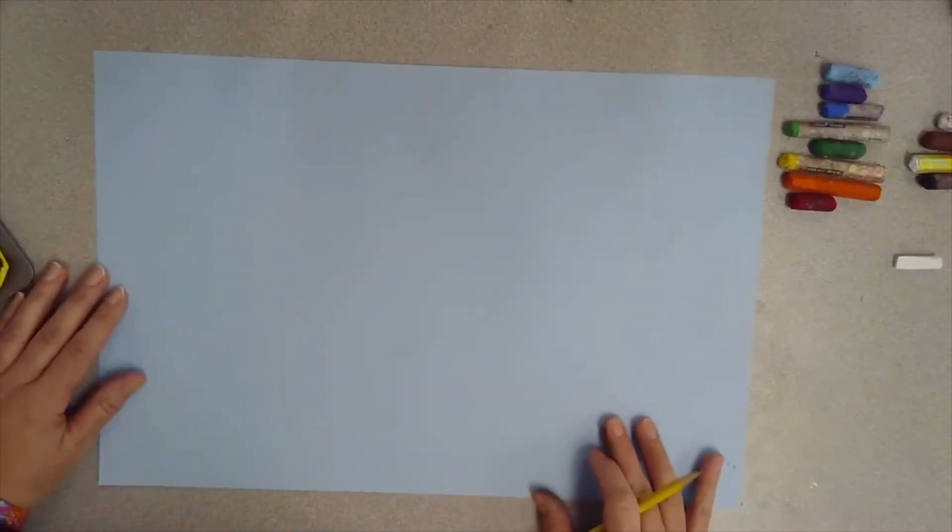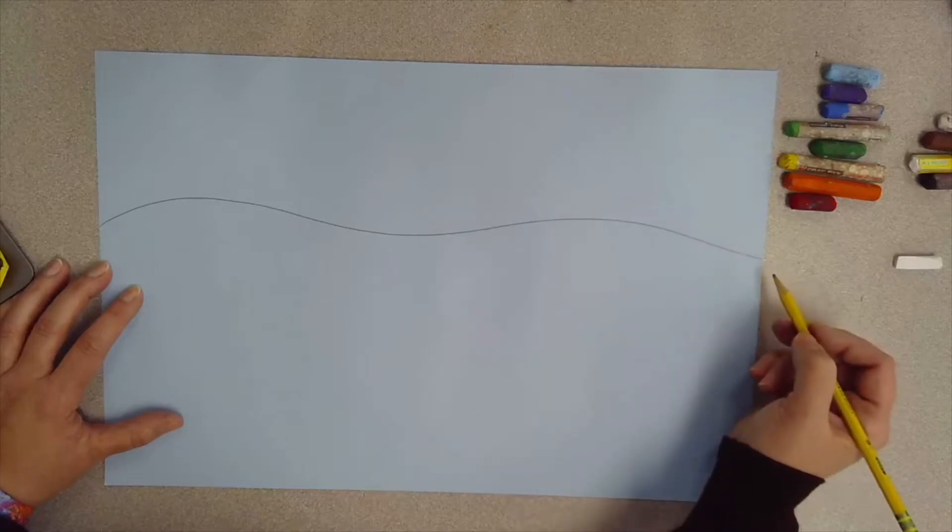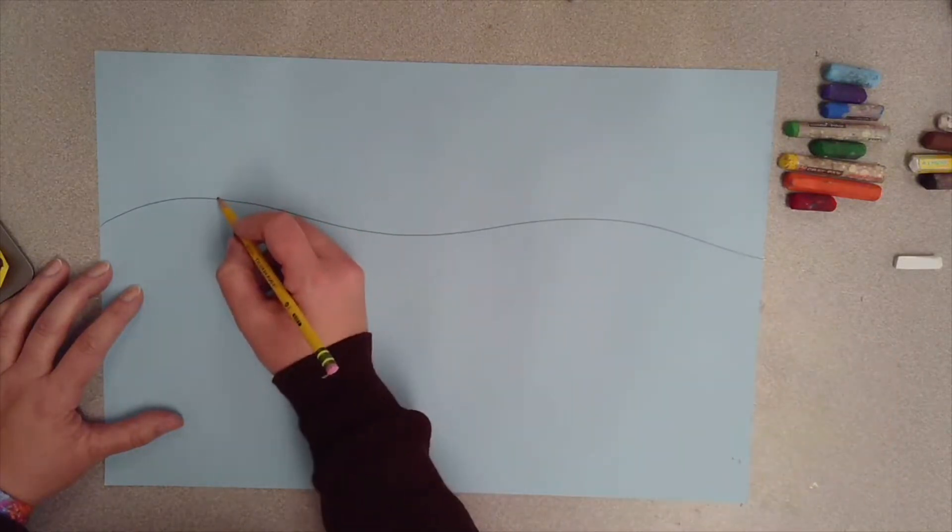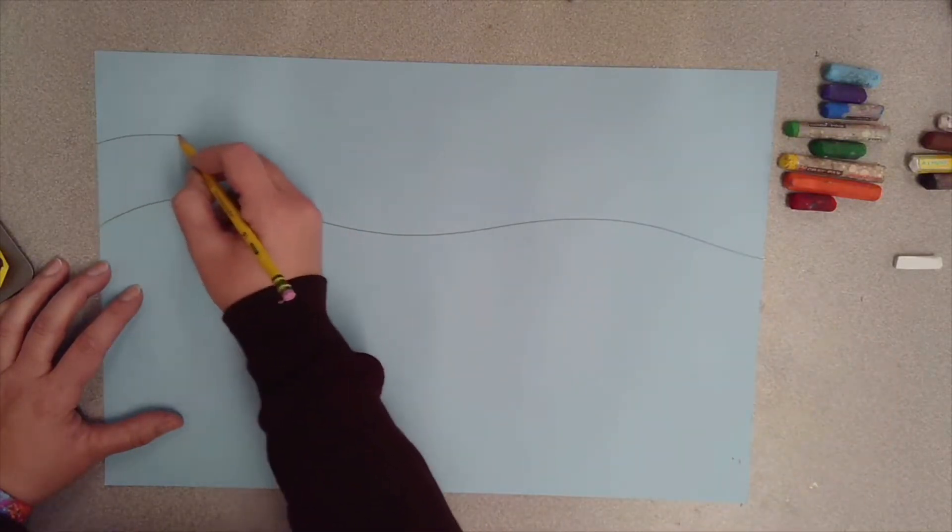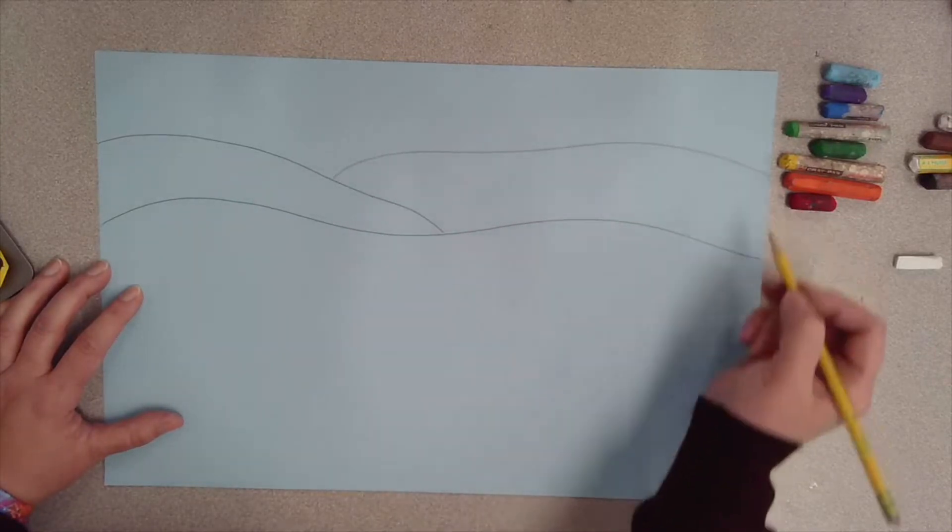Once you're done with that we're going to draw the horizon line. If you remember, the horizon line is where the ground meets the sky. I drew a wavy line to match some of Grandma Moses's pictures because she had hills that overlapped in the background of most of her paintings.